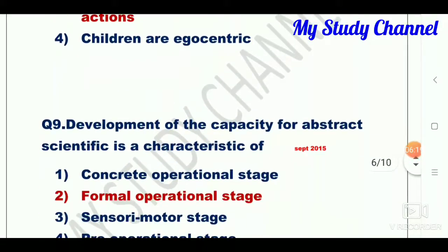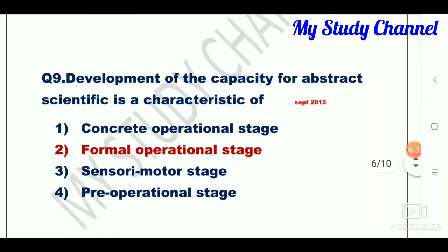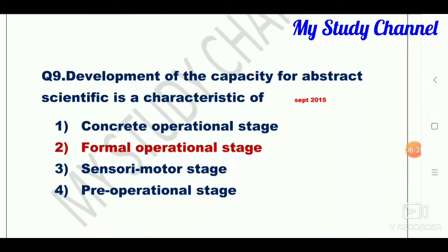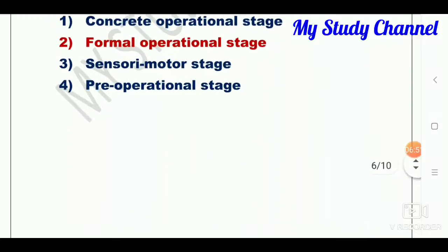Question number nine: development of the capacity for abstract scientific thinking is a characteristic of dash. Option one is concrete operational stage; second is formal operational stage; third is sensory motor stage; fourth is pre-operational stage. Option two is the right answer — formal operational stage. Development of the capacity for abstract scientific thinking is a characteristic of the formal operational stage.